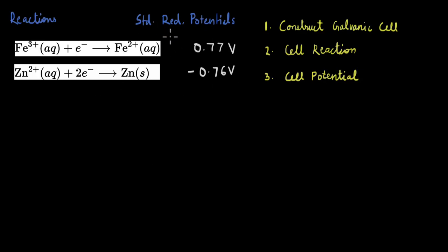So, we have this question here, which is asking for three things. First, to construct a galvanic cell based on this information, to write the cell reaction, and to calculate the cell potential. The information given are these two half reactions and their standard reduction potentials. You can pause this and give this a try, and we'll continue in a few seconds.